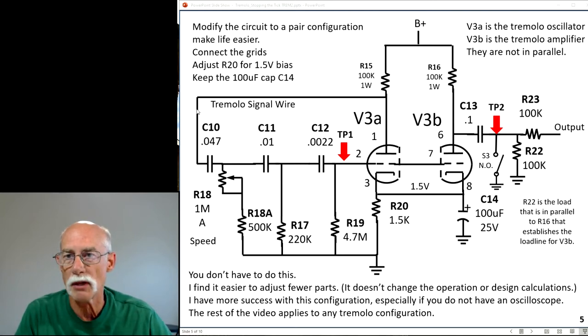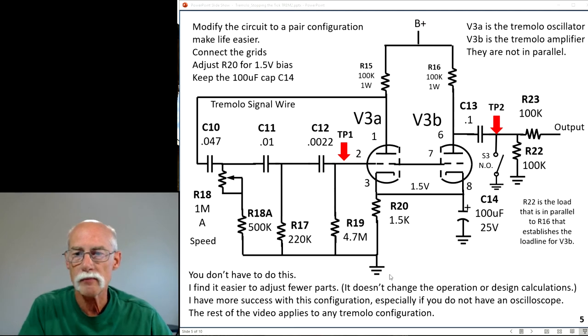This is the tremolo signal wire. I like this configuration just a little bit better, and then you connect the grids. They're not in parallel. Parallel means I've connected both the cathodes and the plates. This is just two independent amplifiers where I'm putting the signal to both amplifiers. They're not in parallel—that's important to understand.